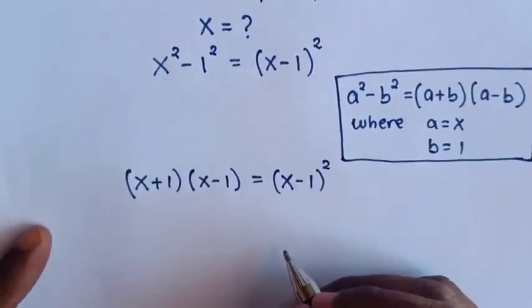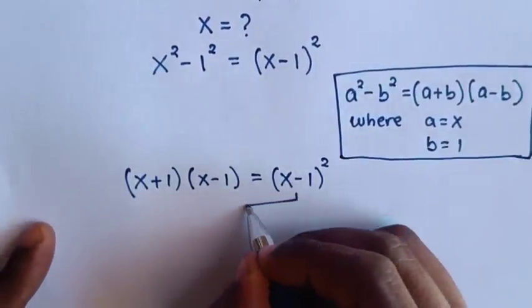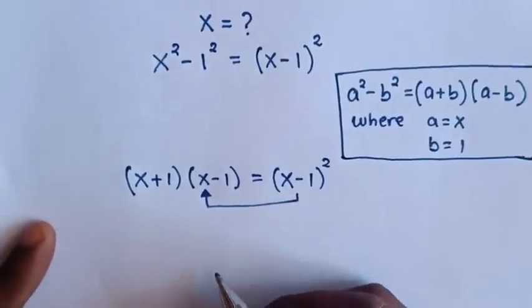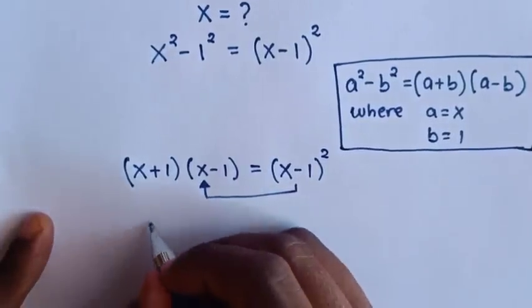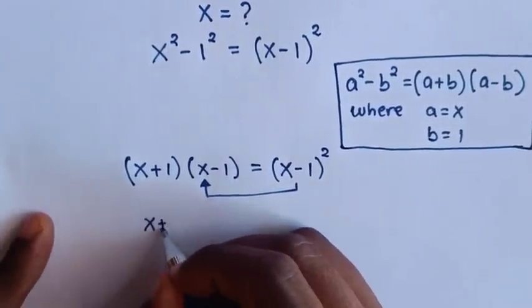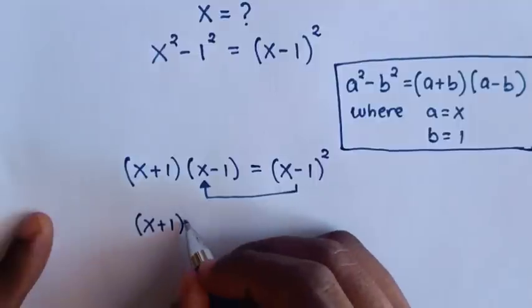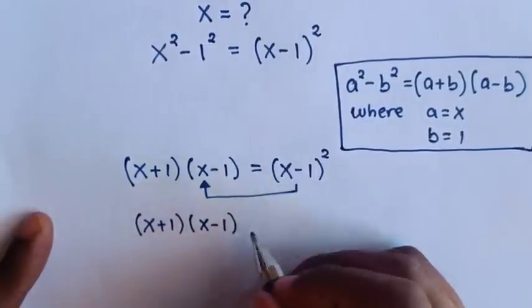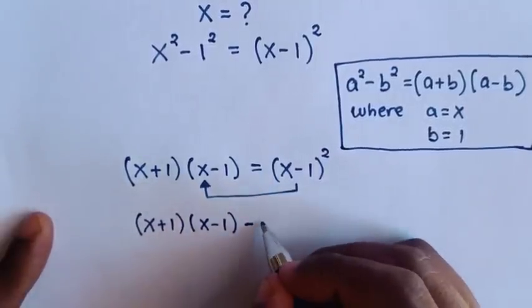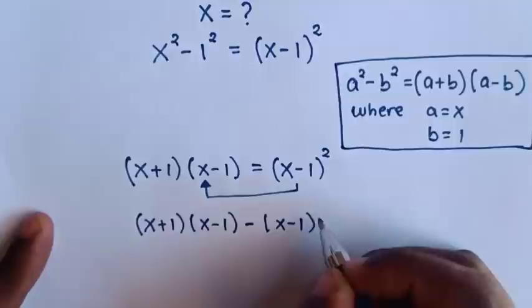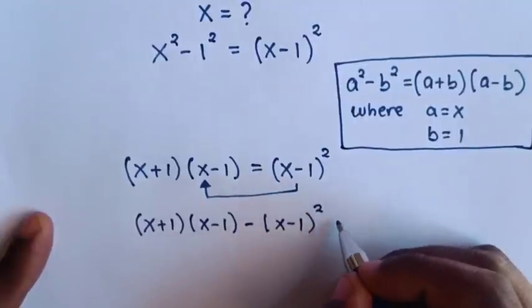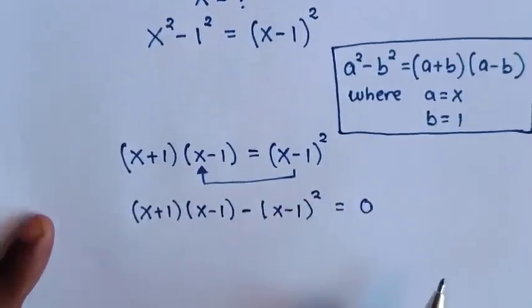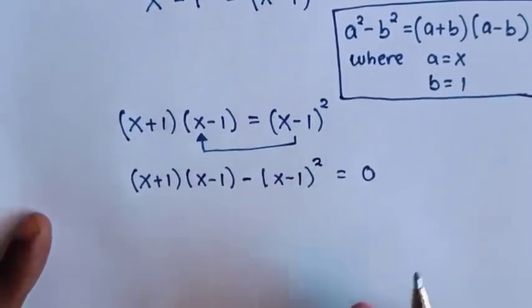Then in the next step, we take this to the left side. So our equation will be (x plus 1)(x minus 1) minus (x minus 1) squared is equal to 0.